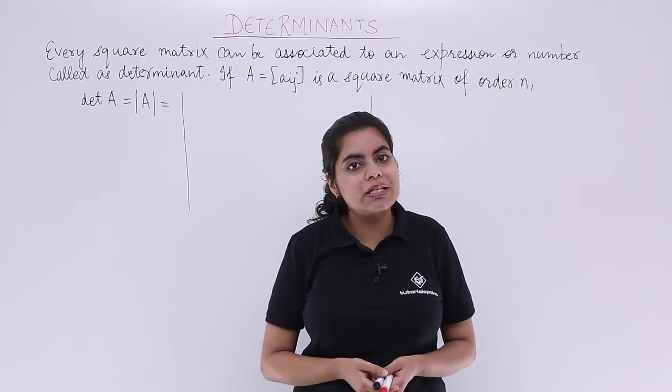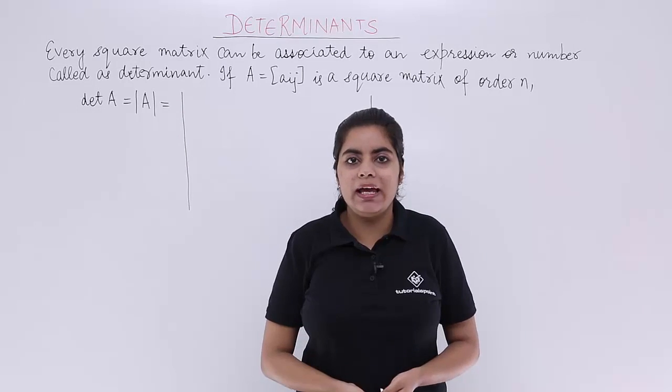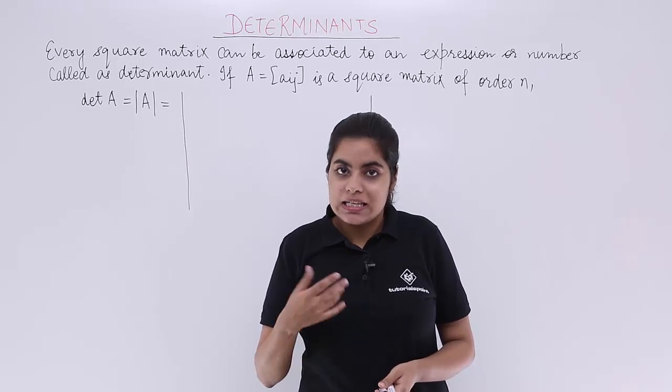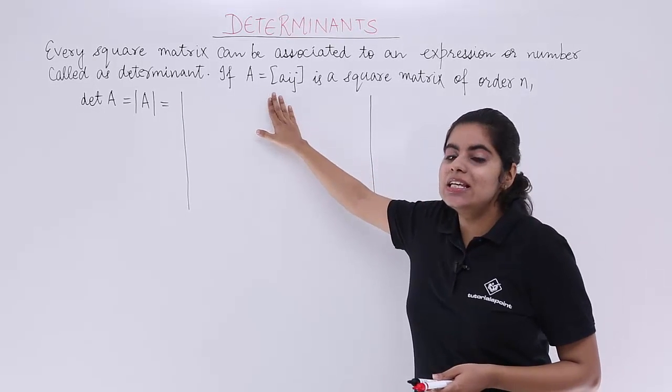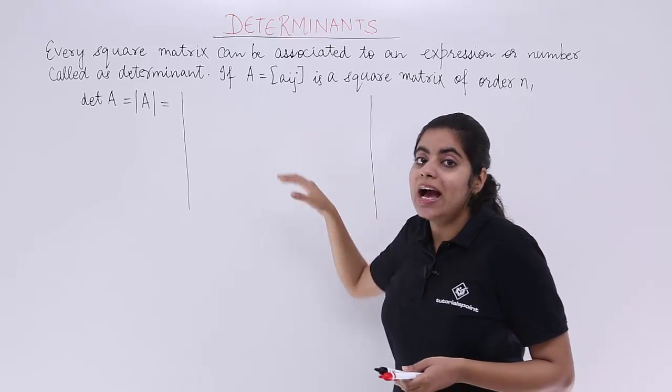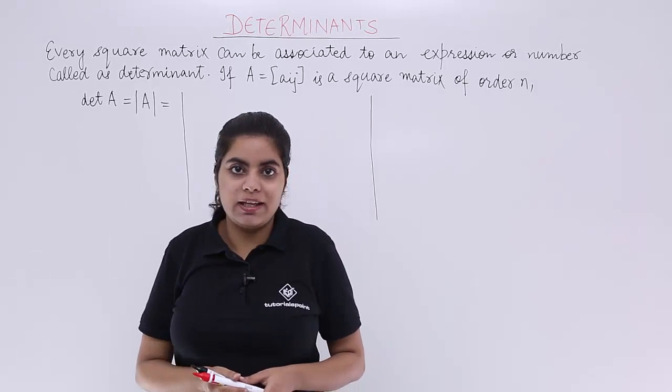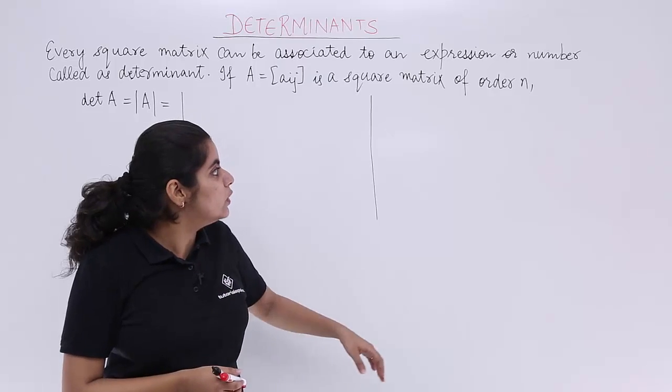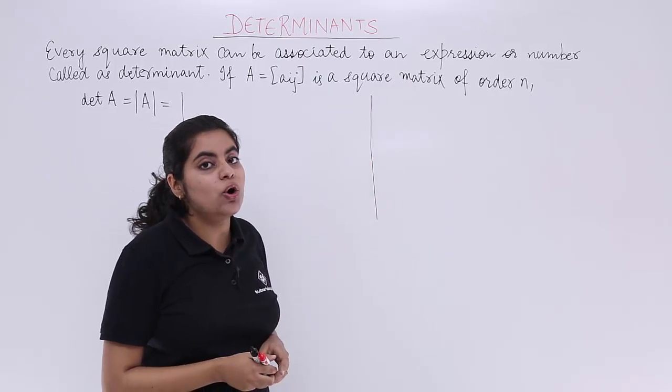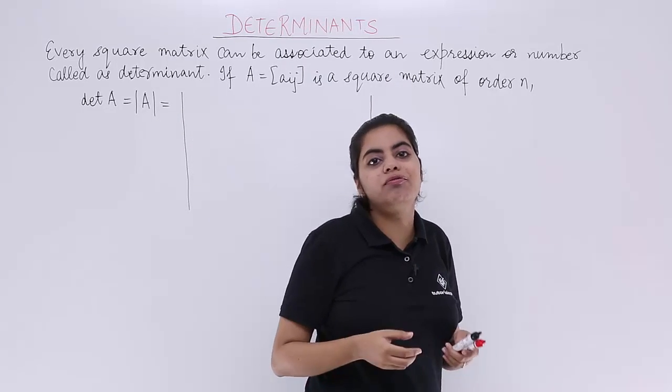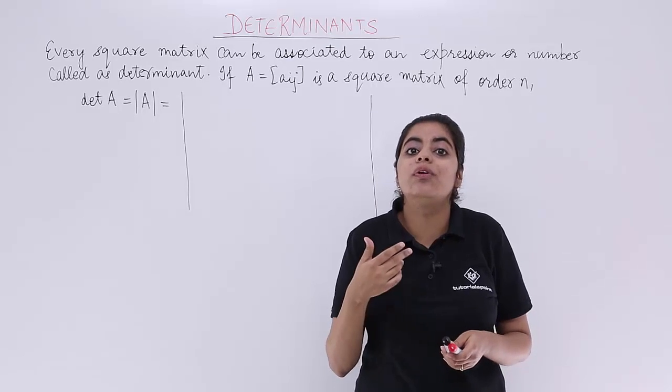Now if the square matrix is there, the order may be m by m or n by n. If A = [aij] is given to me, this is a matrix and its order is n, that means n by n. Then how to define a determinant, how to write a determinant.